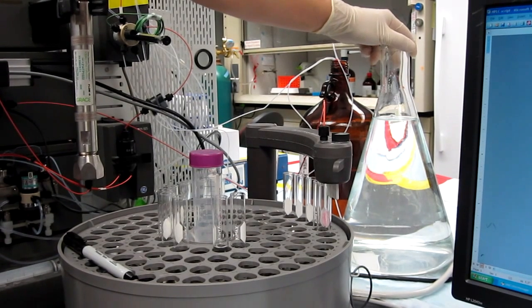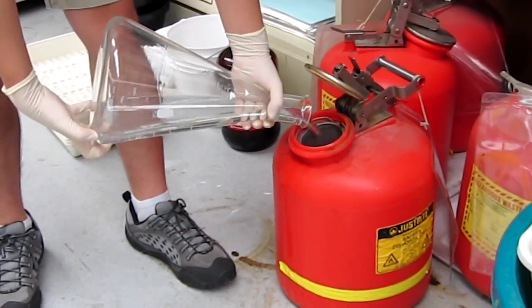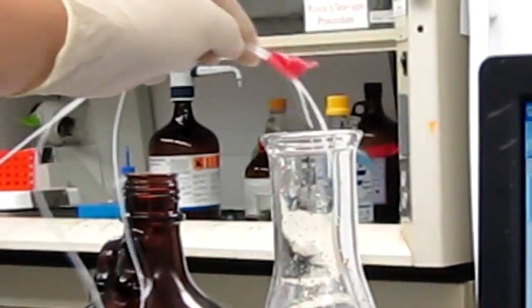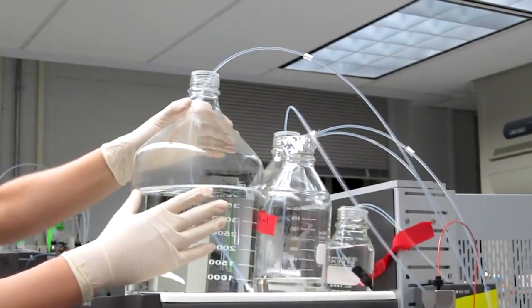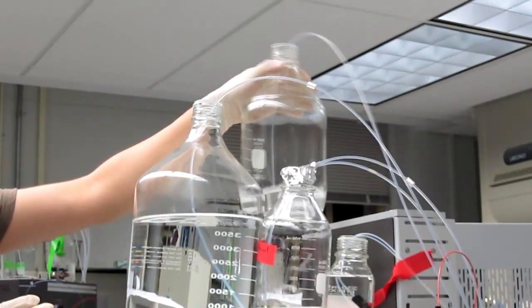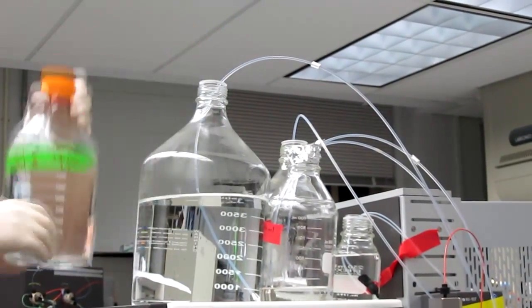First, we must make sure that everything is in order before we run our sample. Check to see that the waste is not near full. Make sure that there is enough solvent A and B for the amount of runs you need. That way, the lab can always have HPLC solvents available for use.